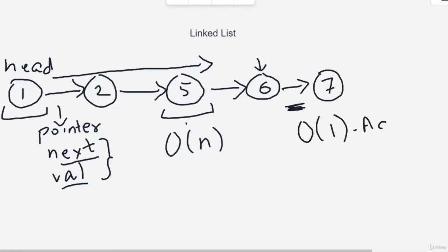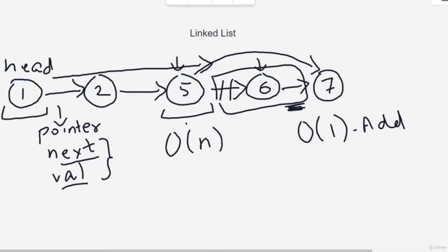Even deletion takes O(1) if you have the right pointer. Suppose you have a pointer to node 5 and want to delete node 6. You don't need to cancel anything — you make 5's next directly point to 7, basically pointing 5's next to 6's next. Then 6 comes out of the linked list, leaving you with 1, 2, 5, and 7. So deletion is O(1) as well.